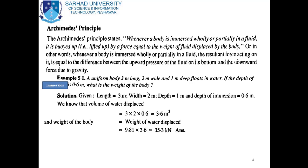Now we will solve an example. A uniform body 3 meters long, 2 meters wide, and 1 meter deep floats in water. If the depth of immersion is 0.6 meters, what is the weight of the body? The given data: length = 3 m, width = 2 m, depth = 1 m, depth of immersion = 0.6 m. The volume of water displaced equals 3 × 2 × 0.6 = 3.6 cubic meters.